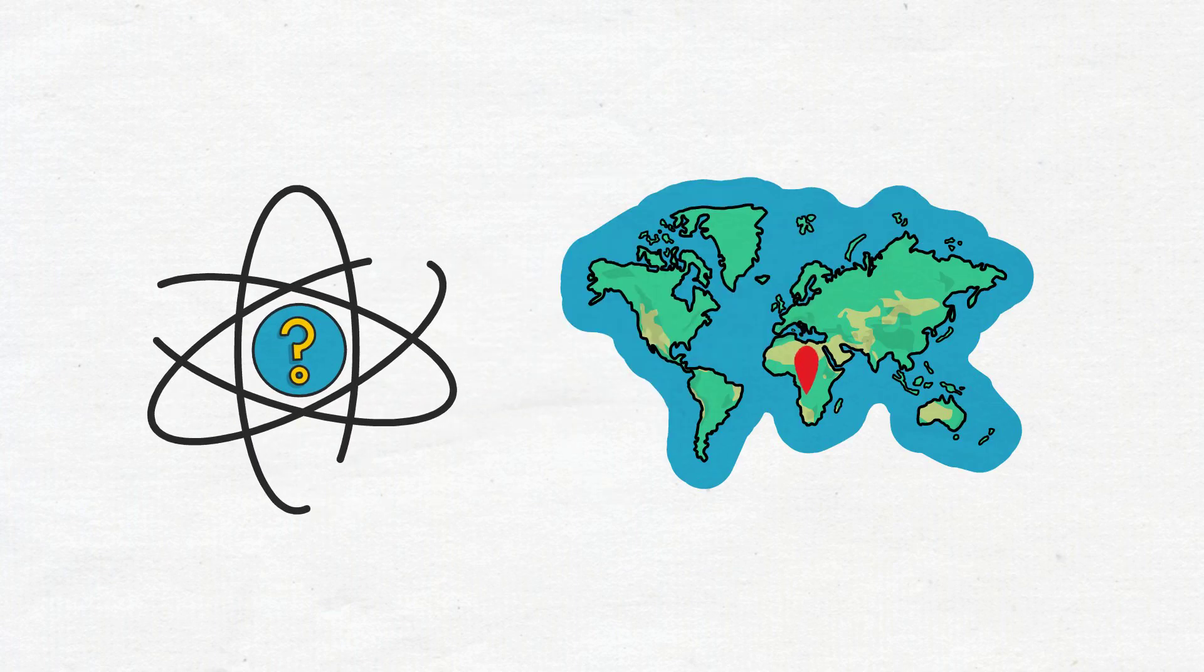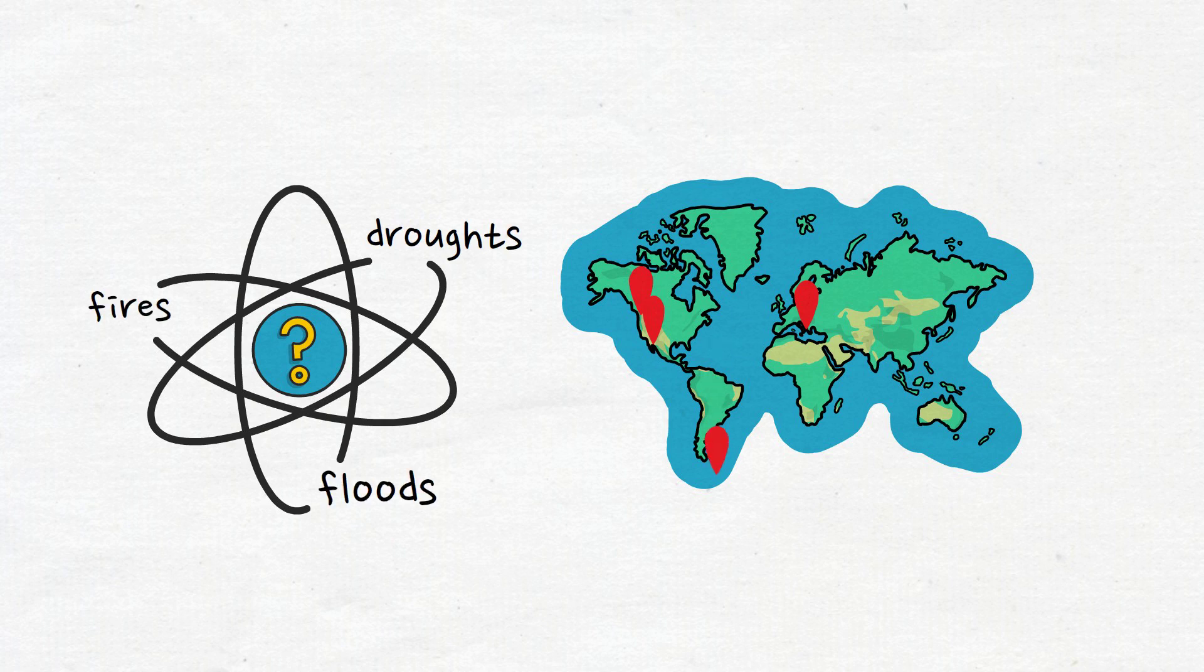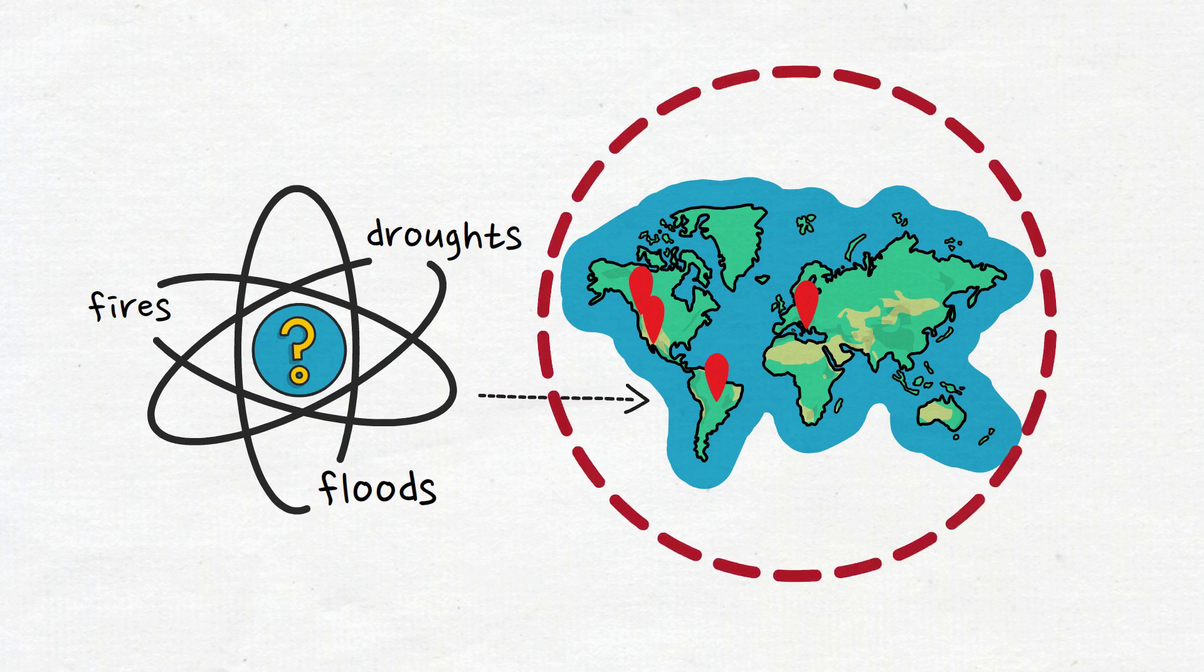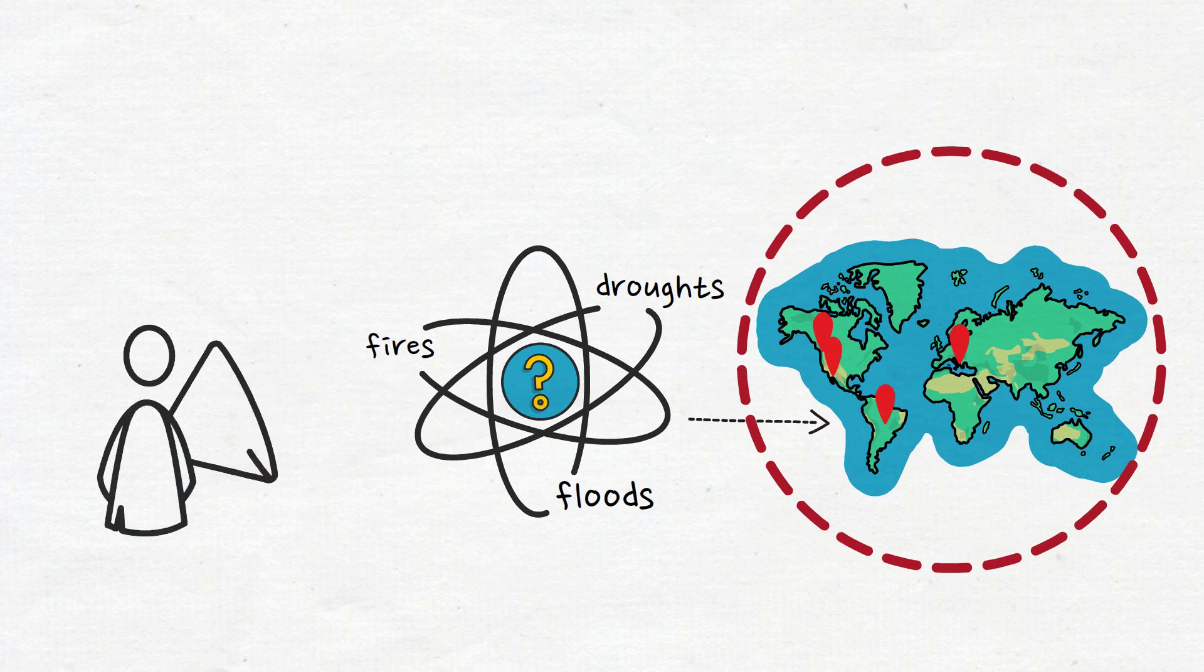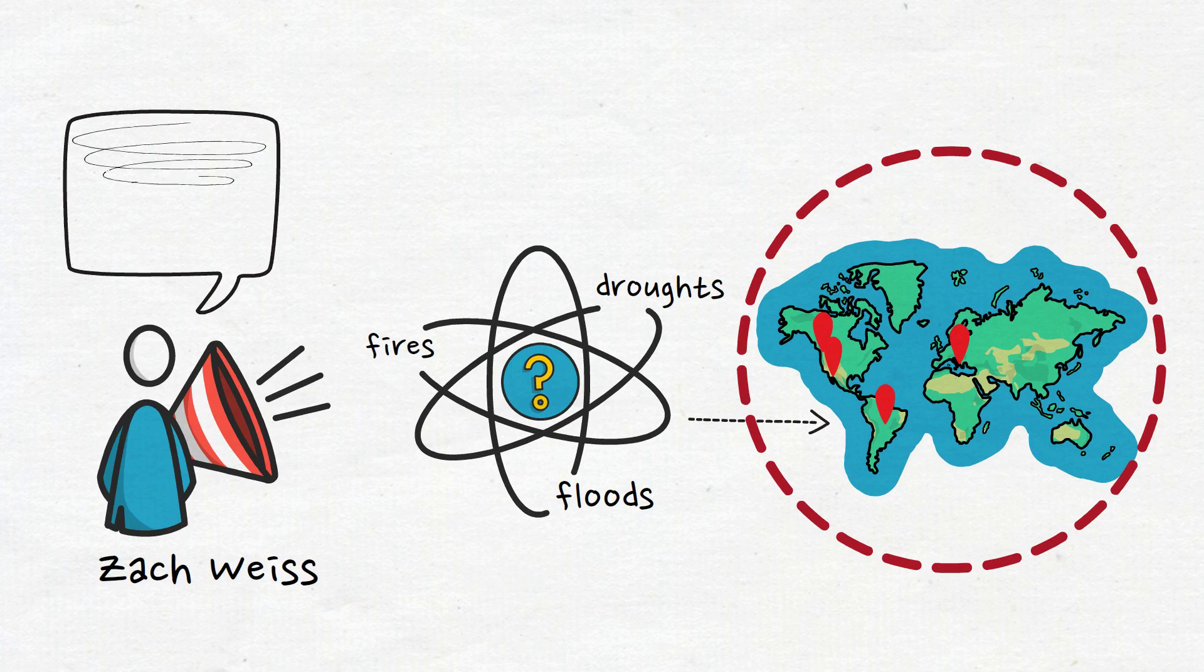This is happening in Greece, in California—we had droughts and fires. British Columbia had droughts, then fires, then floods. Brazil was having those three. So this is a pattern all around the world, and the only person I know promoting this is Zach Weiss, and he's calling it the watershed death spiral.